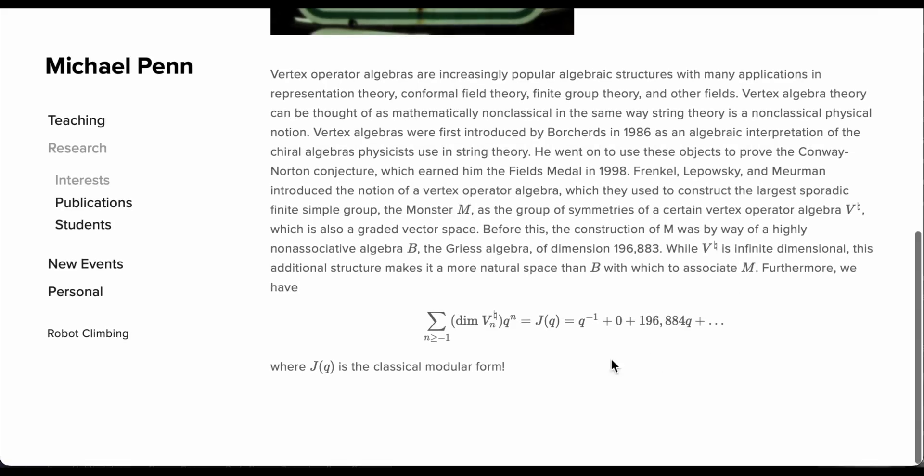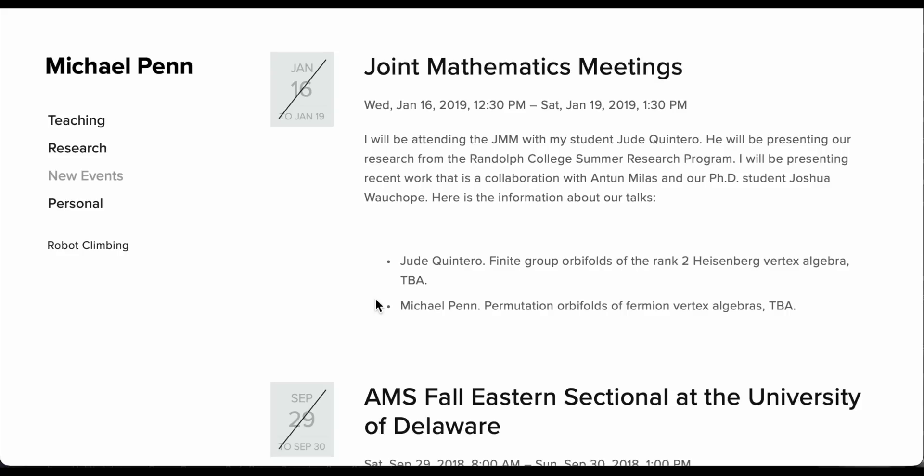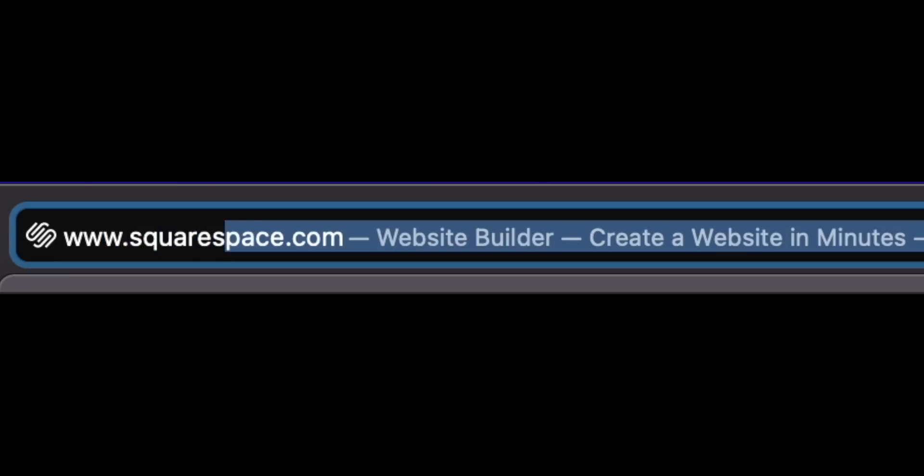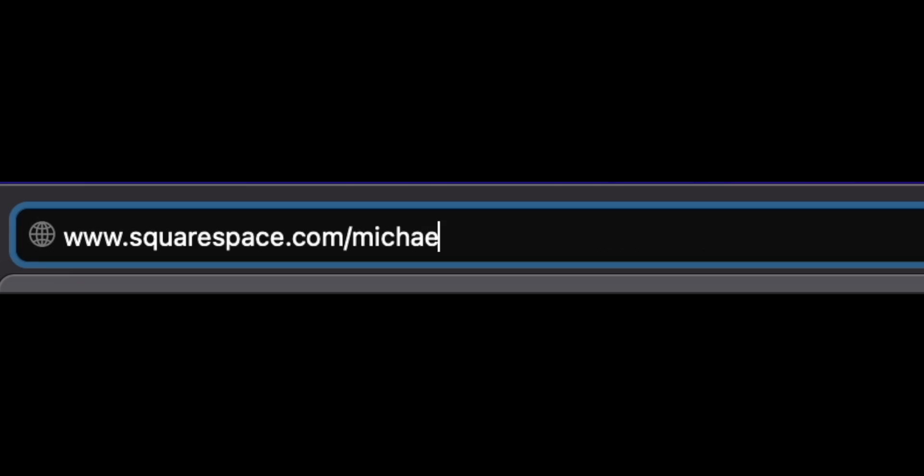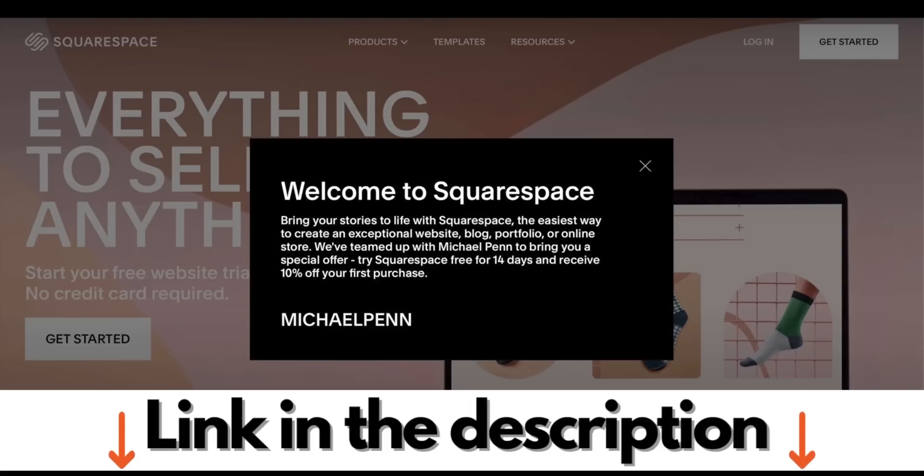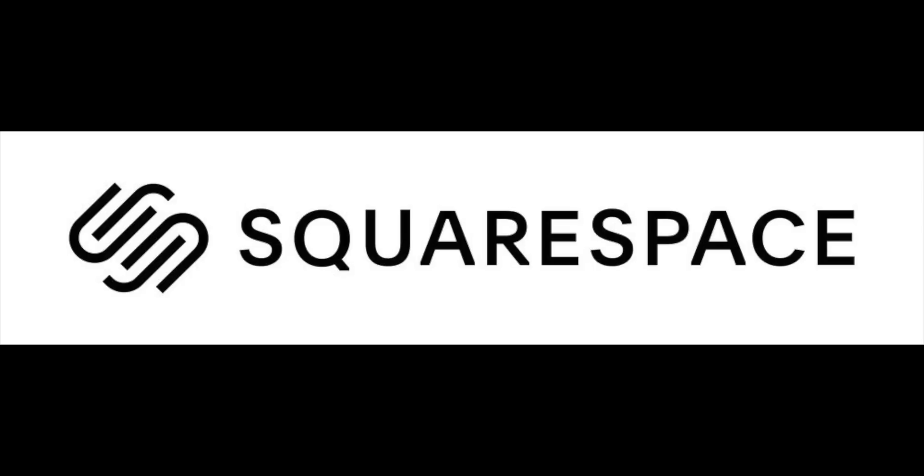Although you can access the code if you'd like, there's even an easy LaTeX integration that I have on my website. Whether you're already running an online store or have just begun your journey into web design, Squarespace has the tools you need to succeed. So what are you waiting for? Go check out squarespace.com for a free trial, and when you're ready to launch, go to squarespace.com/michaelpenn to save 10% off your first purchase of a website or a domain. And once again, I'd like to thank Squarespace for supporting this channel.